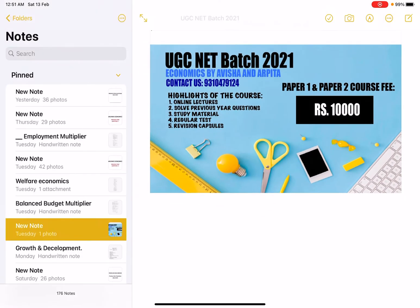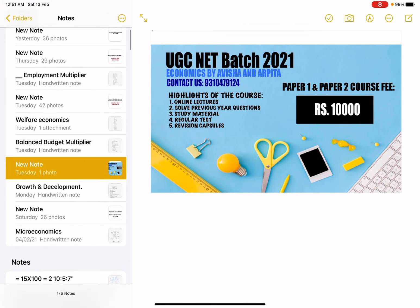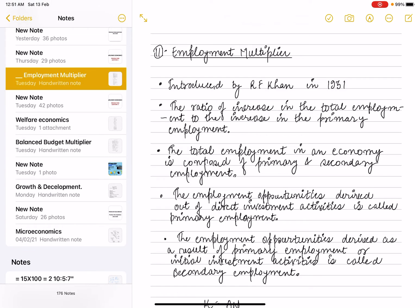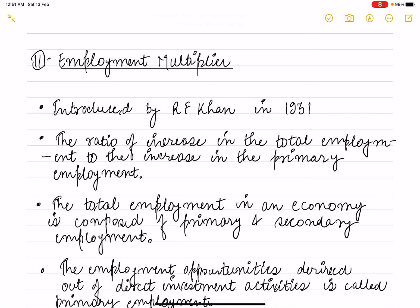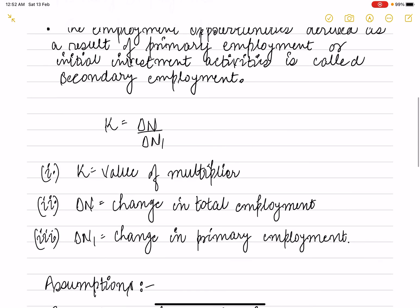Now let's talk about the employment multiplier, which was introduced by R.F. Khan in 1931. The employment multiplier is basically the ratio of the increase in total employment to the increase in primary employment.